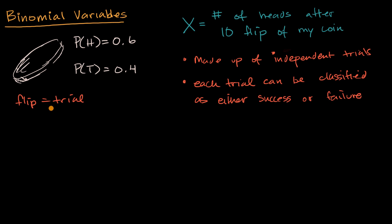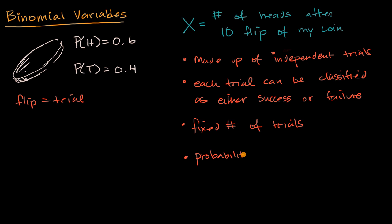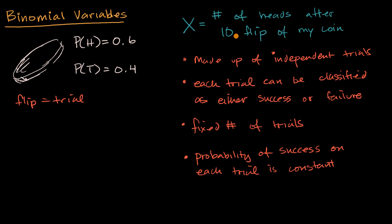Another condition for being a binomial variable is that you have a fixed number of trials — in this case, 10 flips of our coin. And the last condition is that the probability of success on each trial is constant. On each flip, the probability of heads stays at 0.6. If that were to change from trial to trial — say if you swapped the coin and each coin had a different probability — then this would no longer be a binomial variable.